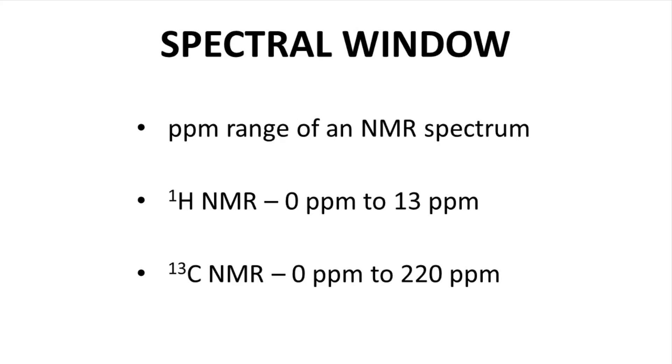The spectral window is the ppm range that is analyzed in an NMR spectrum. Proton NMR has a typical chemical shift range, a spectral window, running from 0 ppm to 13 ppm.